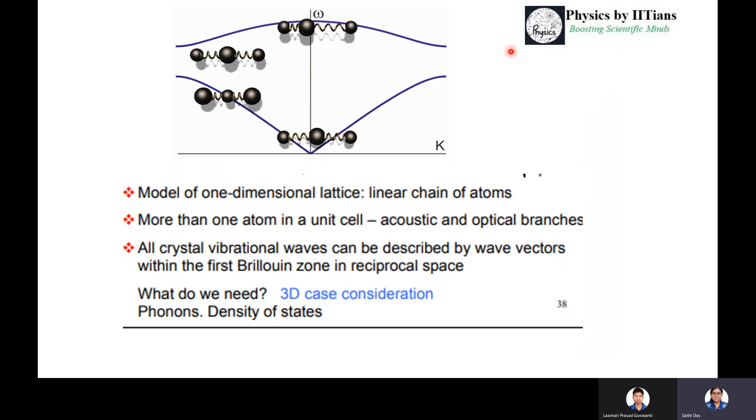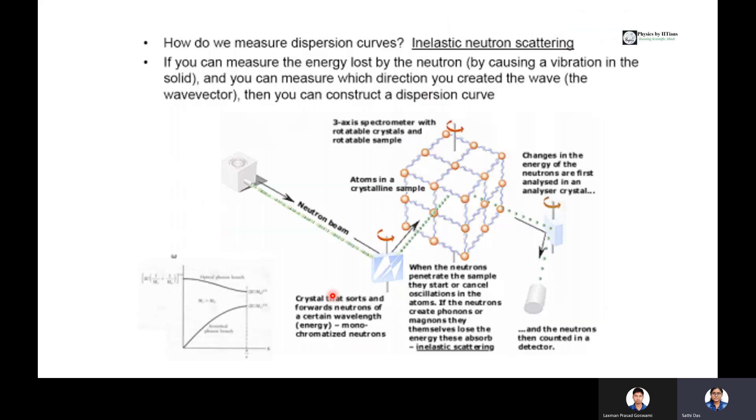What we have discussed in this lecture: we discussed the model of one-dimensional lattice, considering a linear chain of atoms. Then we take more than one atom in a unit cell. We have to introduce the concept of acoustic branches and optical branches, which are introduced due to two kinds of atoms present inside the lattice. All crystal vibration waves can be described by wave vectors within the first Brillouin zone in reciprocal space. In the next lecture, we shall discuss phonon density of states.